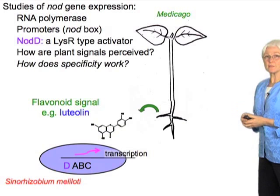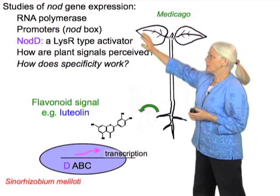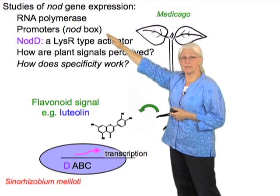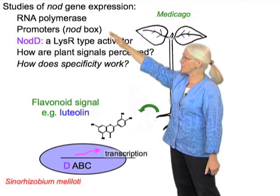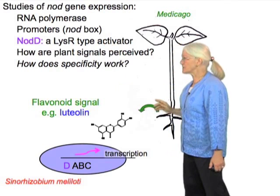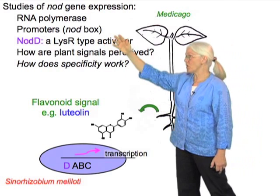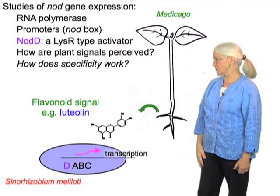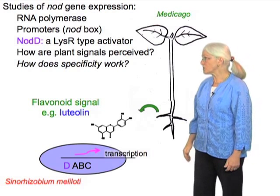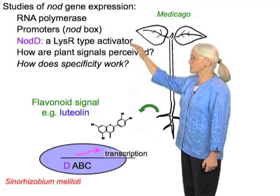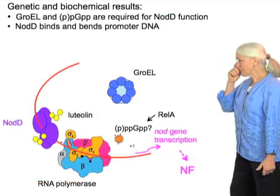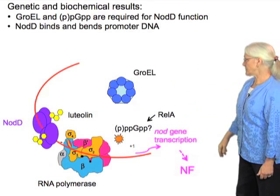What are all the elements we're going to have to look at? At a promoter, there's going to be an RNA polymerase, there's going to be a DNA motif to interact with, and in this case there's an activator. We wonder how these plant signals interact with all of these components to achieve transcription, and how this occurs in a specific way. I'll now look first and most specifically at the protein NodD, putting it in the context of all those other components.